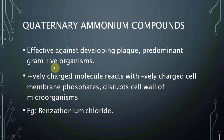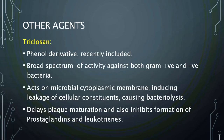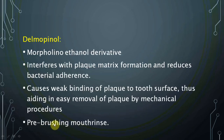Quaternary ammonium compounds are effective against developing plaque-positive organisms, such as benzethonium chloride. These molecules react with negatively charged membrane phosphatases and disrupt the cell wall of microorganisms. Triclosan is a phenol derivative with broad-spectrum activity against both gram-positive and gram-negative bacteria; it acts on the microbial cytoplasmic membrane, causes leakage of cellular constituents, delays plaque maturation, and inhibits formation of prostaglandins and leukotrienes. Delmopinol is a cathinol derivative that interferes with plaque matrix formation, reduces bacterial adherence, and is used as a pre-rinsing mouth rinse.